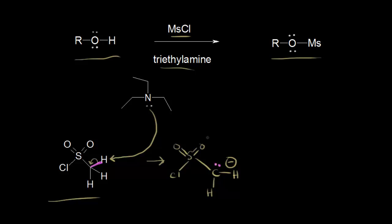In the next step, these electrons in magenta are going to move in here to form a double bond between the sulfur and the carbon, and that would kick these electrons off onto chlorine to form the chloride anion. Now we would have sulfur double bonded to an oxygen and double bonded to another oxygen, with a double bond between sulfur and this carbon — this carbon is bonded to two hydrogens. We can think about sulfur as being electrophilic because this sulfur is bonded to oxygens, which are more electronegative and withdraw electron density from that sulfur, leaving that sulfur partially positive.